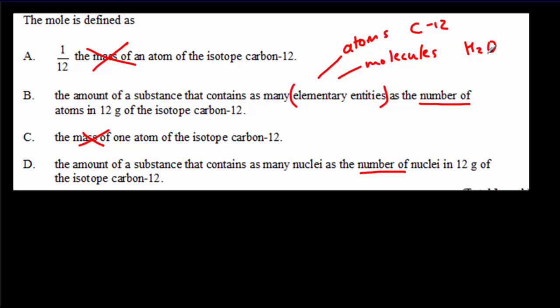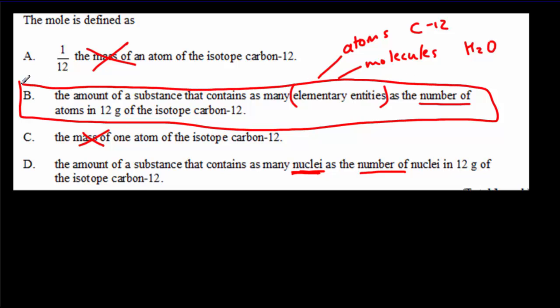So, the elementary entities would refer to either atoms or to molecules. Answer D here is, this is true. The number of nuclei would equal the number of atoms. Atoms would be your smallest entity for carbon. But it really doesn't lend itself to the more general definition. And that's why the IB put down B here as the more general definition.